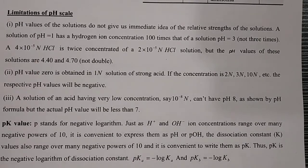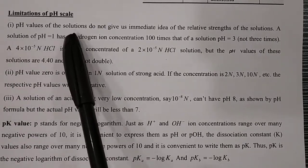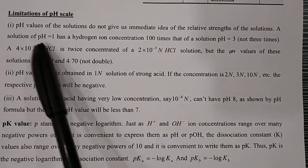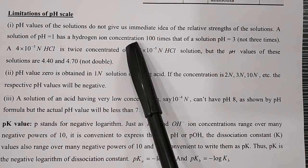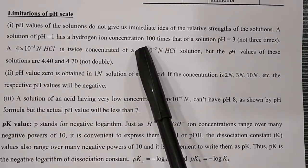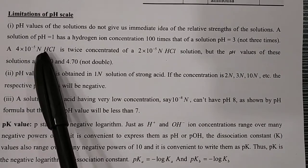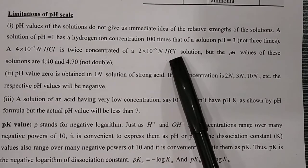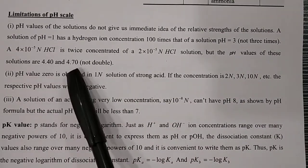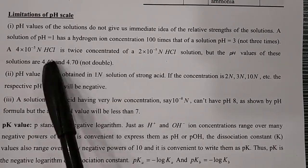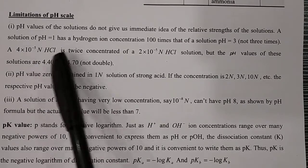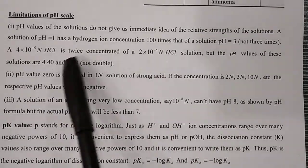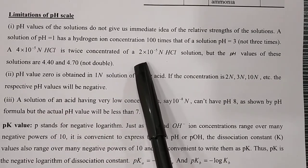The limitations of the pH scale: First, pH values do not give us an immediate idea of the relative strength of a solution. A solution of pH 1 has a hydrogen ion concentration 100 times that of pH 3. A 4.4×10⁻⁵ normal HCl is twice as concentrated as 2×10⁻⁵ normal HCl, but their pH values are 4.40 and 4.70 respectively — meaning pH does not have a direct proportional relationship with concentration.